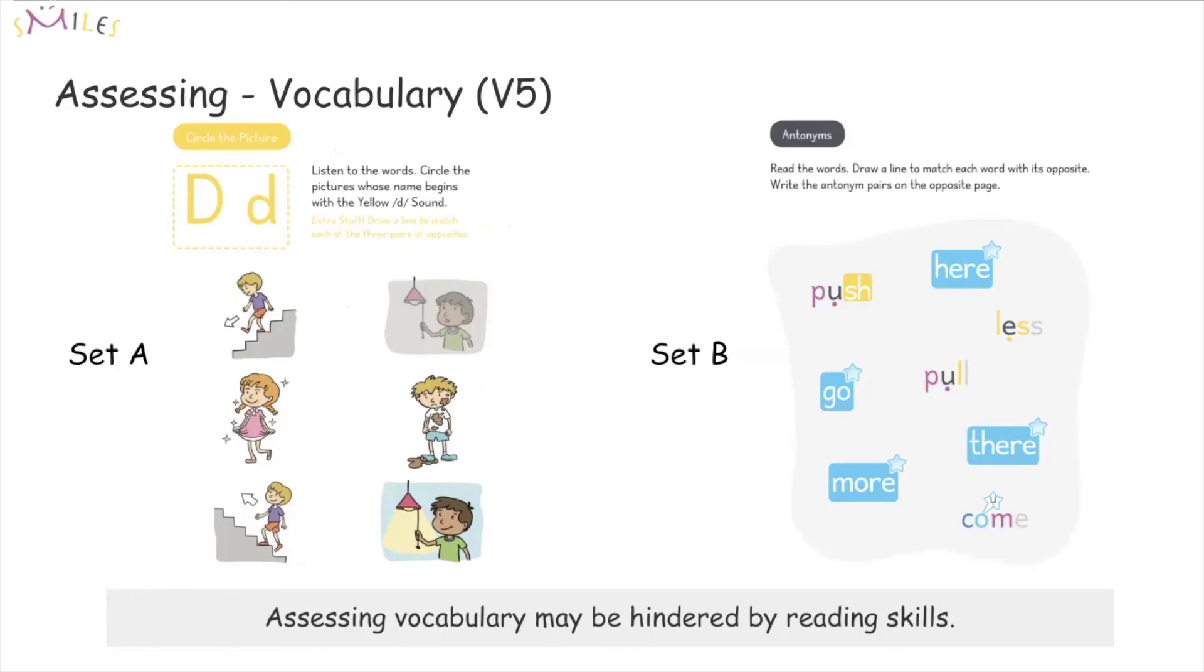Pairing of antonyms is another way to demonstrate understanding of vocabulary. In Set A, the activities are visual. While in Set B, the activities are based in reading.